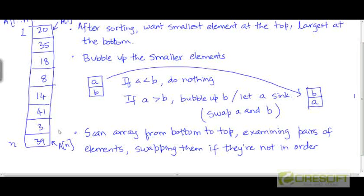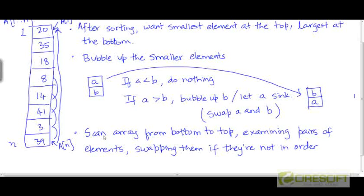We're going to keep doing this while scanning the array from bottom to top. First we'll look at these two elements, then these two, then these two, and so on — scanning the array from bottom to top, examining pairs of elements and swapping them if they are not in order. That is, if the lighter element is present below the heavier element, we're going to swap the two elements. So what would happen if we run this on the initial array?